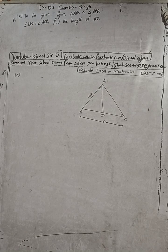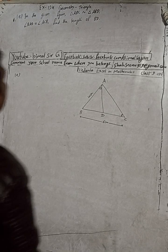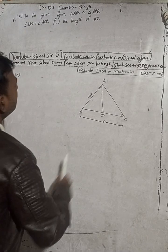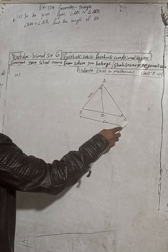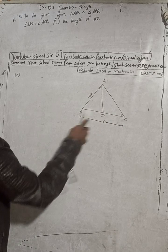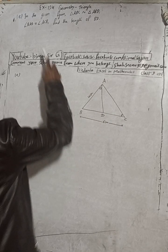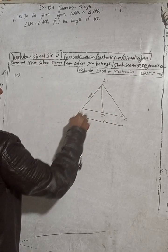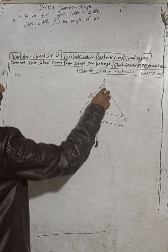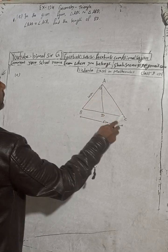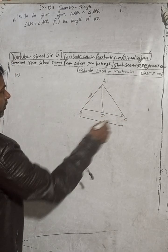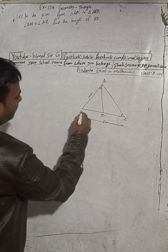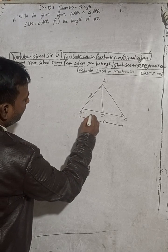This is question number 1e. In the given figure, triangle ABC is similar to triangle ABD. Angle BAD is equal to angle ACB. We have to find the length of BD.